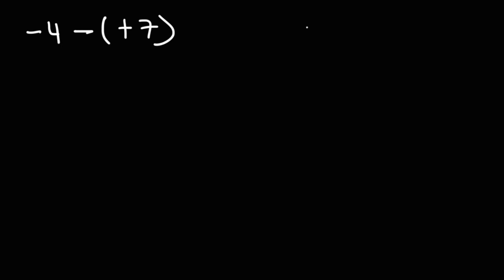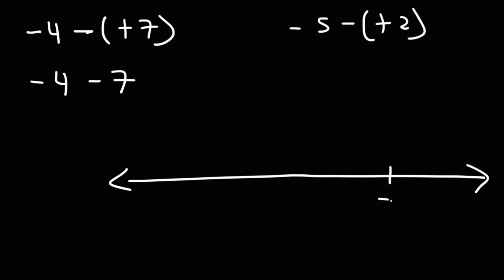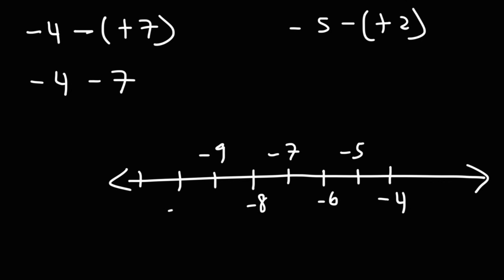Let's try these two examples: negative 4 minus positive 7, and negative 5 minus positive 2. The first thing I would do is simplify the problem. A negative times a positive is a negative, so this is equivalent to saying negative 4 minus 7. Starting with negative 4 and subtracting 7, to subtract you want to move to the left. So we're going to travel 7 units to the left: 1, 2, 3, 4, 5, 6, 7 — that's negative 5, negative 6, negative 7, negative 8, negative 9, negative 10, negative 11. So negative 4 minus 7 is negative 11.